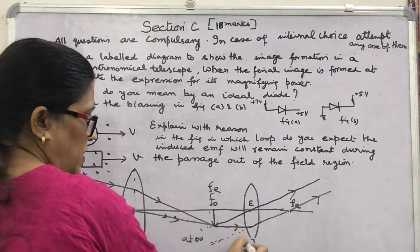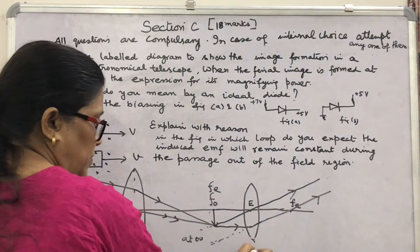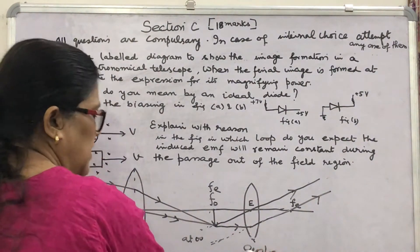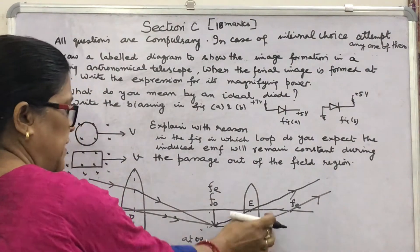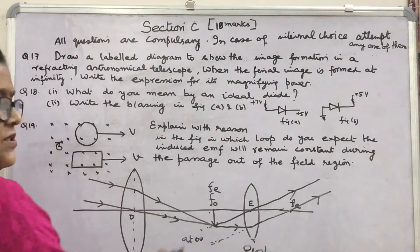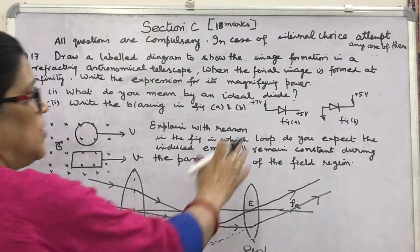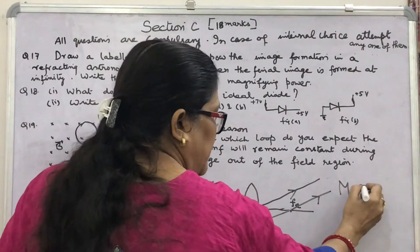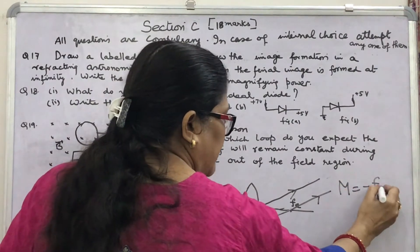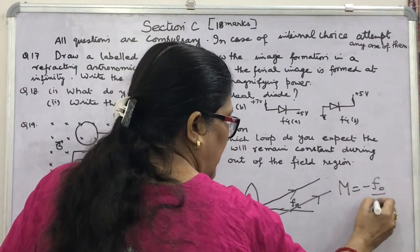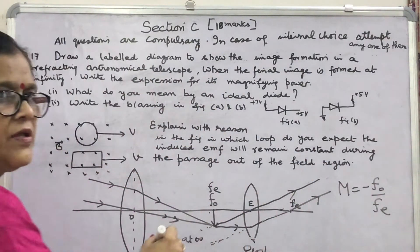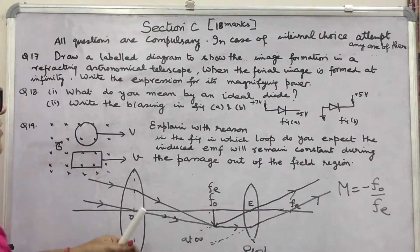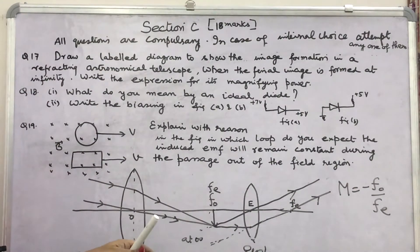So in this way, you will do the proper labelling of the eye lens or eyepiece. This is the complete figure. What is the formula for magnifying power? Simple: minus FO upon FE. In this way, you have to solve the question.